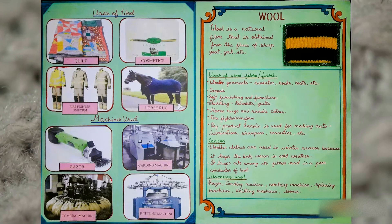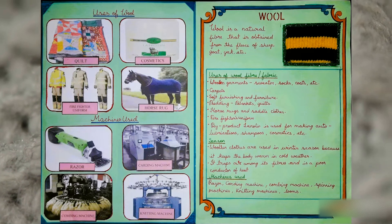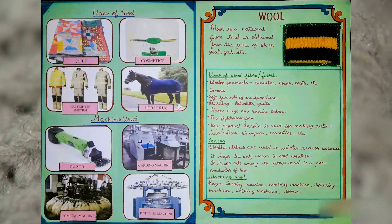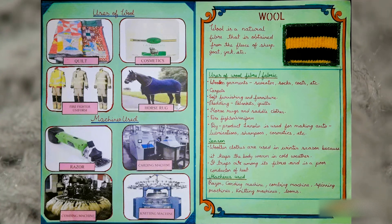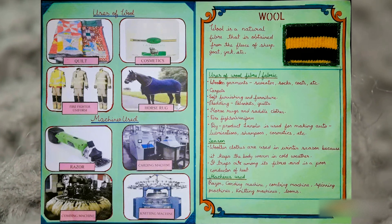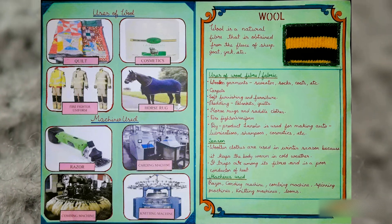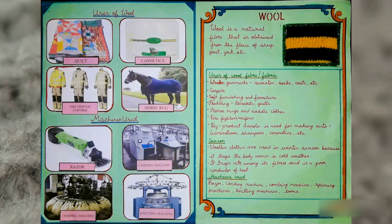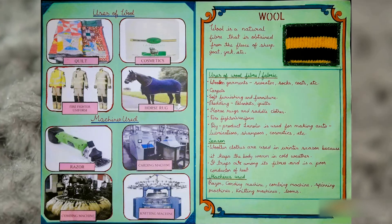Machines used for the production of wool: razor, carding machine, combing machine, spinning machine, knitting machines and looms.